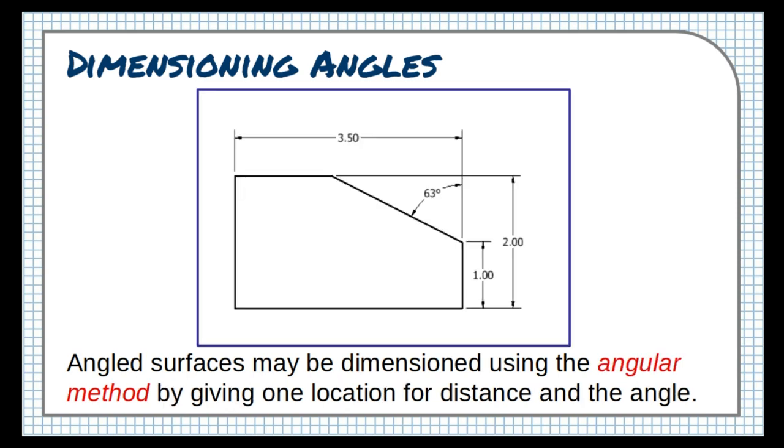In fact, showing the angle too would be an error, because we would be giving the same information in two different ways. The other accepted method for dimensioning angles is called the angular method, in which the location of one end of the slope is given, along with the angular measurement of the surface. In this method, the second endpoint of the slope is not given.